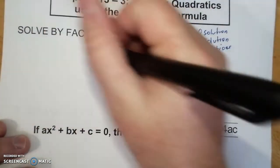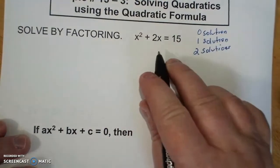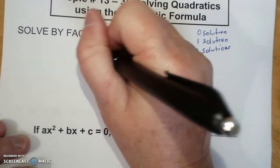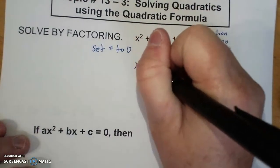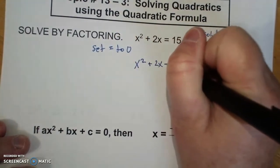First thing you have to do, remember when you're solving any quadratic, you have to set it equal to zero. So I'm going to do x squared plus 2x minus 15.